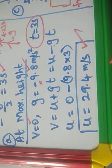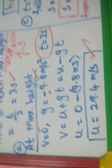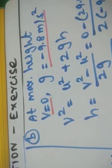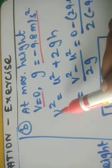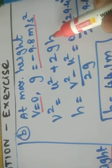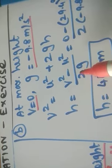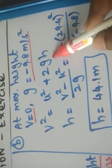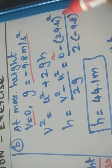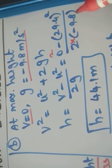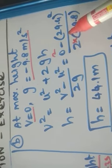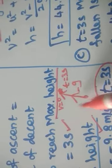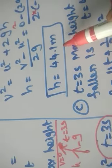The next question, subdivision B, is: what is the maximum height reached? At maximum height, the final velocity is 0 and gravity is −9.8 m/s². Substituting into V² = U² + 2GH, we get H = (V² − U²) / 2G. Using final velocity = 0 and U = 29.4, we find the maximum height is 44.1 metres.